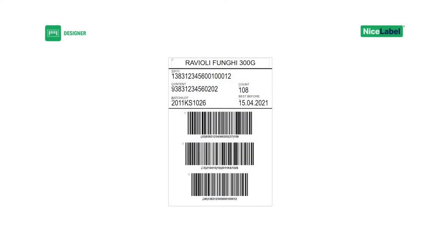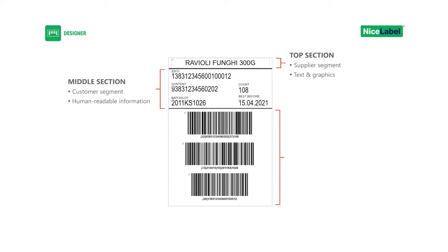Your GS1 label template includes three sections. The top section can include text and graphics and usually contains information like logos and addresses. The middle section contains human-readable information about your palette — this same information is encoded in your barcodes. The bottom section contains your GS1-128 barcodes encoded with your palette information. Note that only the bottom section is mandatory for GS1-128.